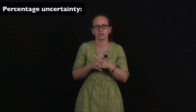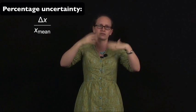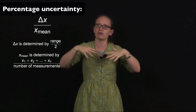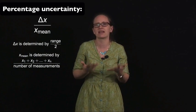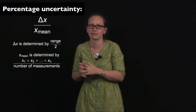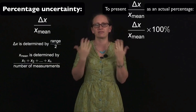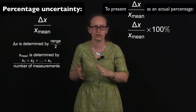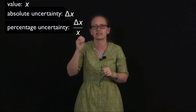The other way to present an uncertainty is as a percentage uncertainty. The percentage uncertainty is calculated by dividing the absolute uncertainty — obtained using range divided by two — by the value, which comes from the mean of the measurements. If you want to present it as an actual percentage, you then need to multiply by 100. The percentage uncertainty can be useful as a step along the way when you're combining different uncertainties, which we'll be looking at in future videos. If our value is represented by x, we can represent the absolute uncertainty as delta x, and the percentage uncertainty is then written as delta x divided by x.